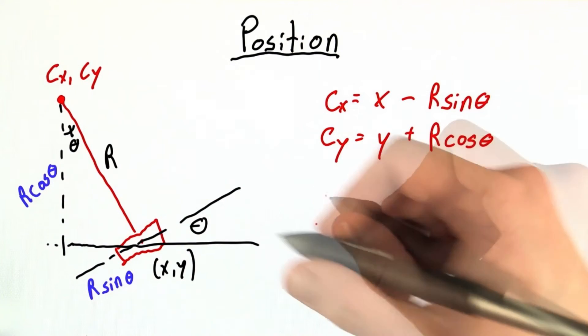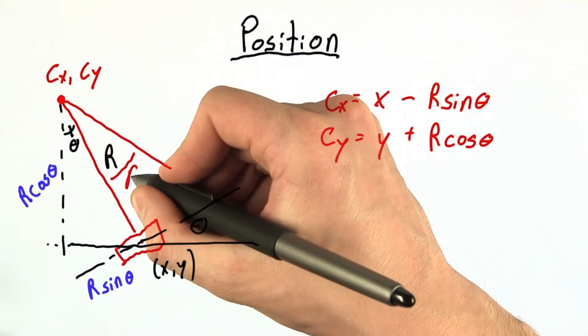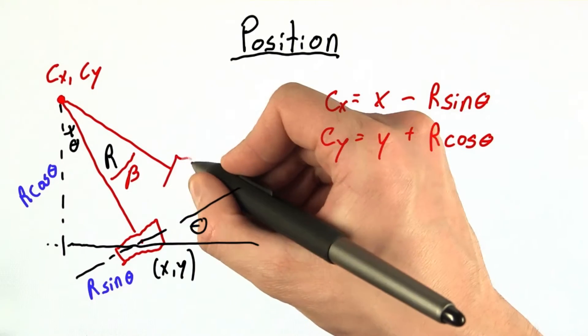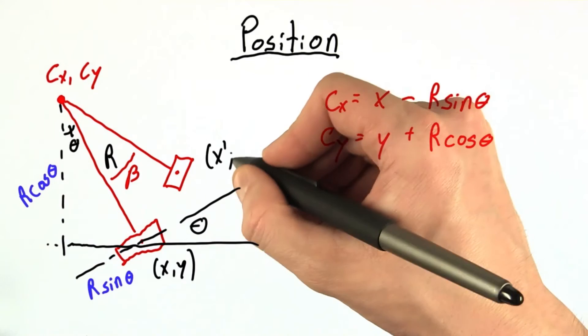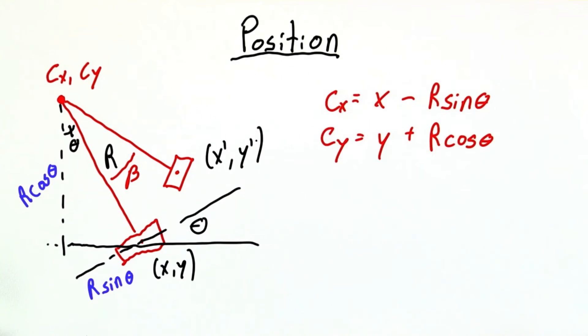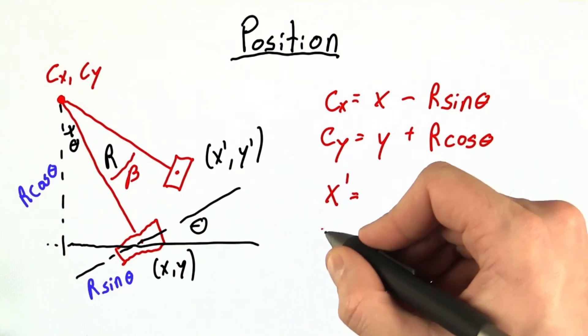Okay, now let's let our car advance by some turning angle beta. Now this angle is beta and here's our robot car. Let's call these coordinates x prime, y prime. How can I get an equation for x prime and y prime?